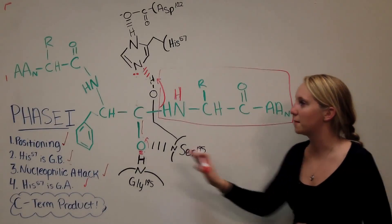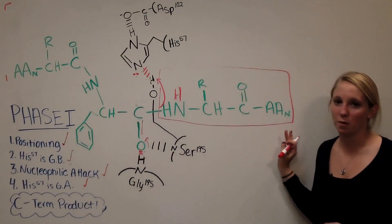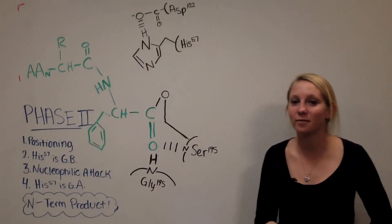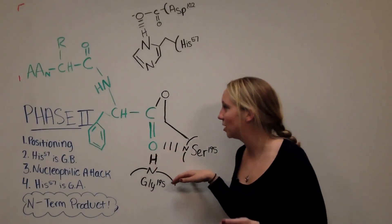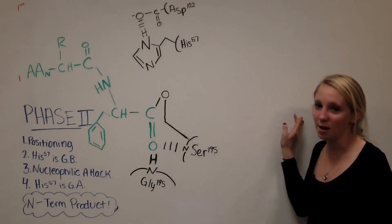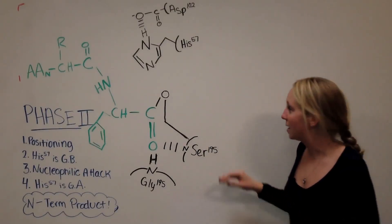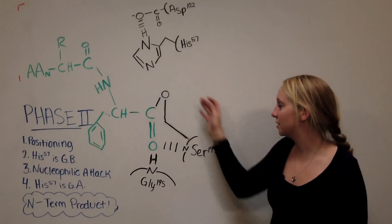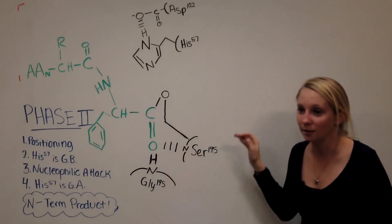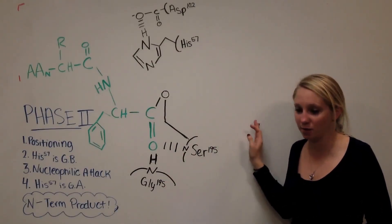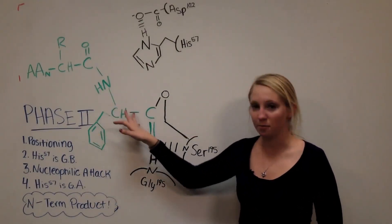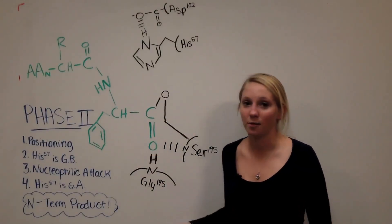This gives you the first product — the C-terminal product — at the end of phase one. Now it's time for phase two. The C-terminal end of the polypeptide has left as the C-terminal product, and the hydrogen that histidine and serine were exchanging is also gone since it was used to protonate the leaving group. In phase two, we're going to be ending with the N-terminal product of the polypeptide bond.